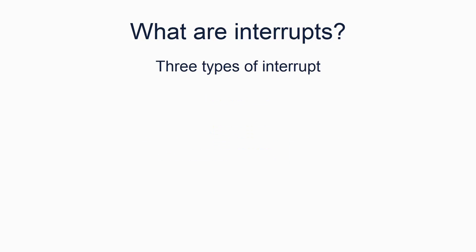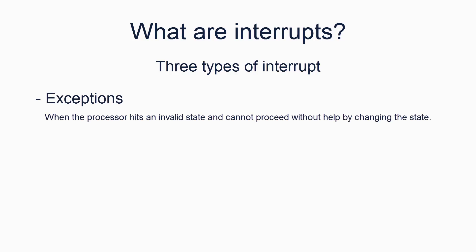There are three types of interrupt, and it is important to understand these. The first type is exceptions. These can be known as interrupts, interrupt gates, or exceptions. Essentially, an exception is a hardware-generated interrupt that corresponds to a specific condition being met, whereby the state of the hardware is invalid such that it cannot proceed.